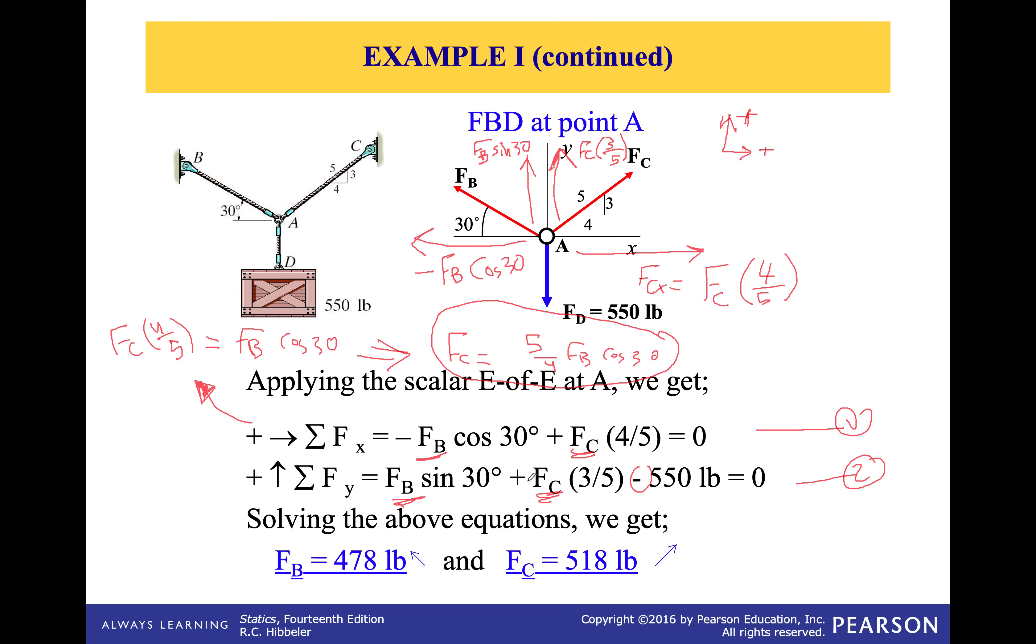Every time or every place you have FC, you put FB and you end up with this equation in term just of FB, one unknown. Then you can find FB. After finding FB, substitute here, you get FC. And that's how you get these two values.